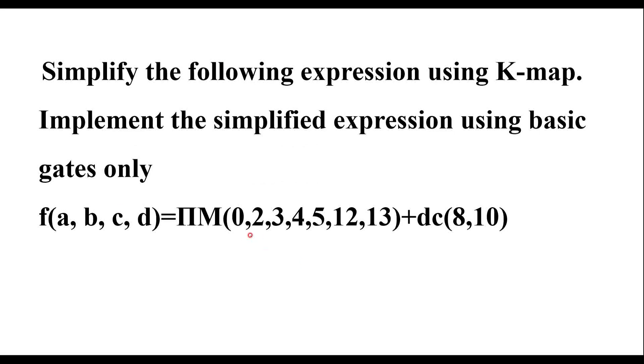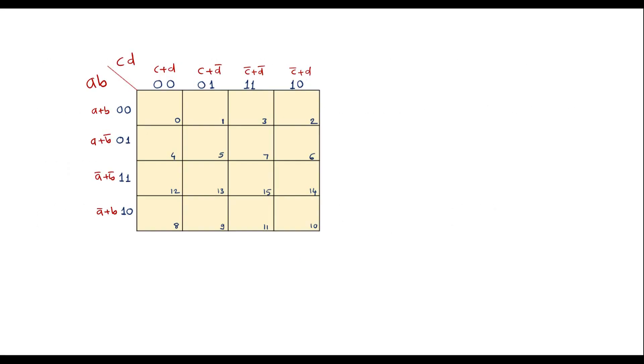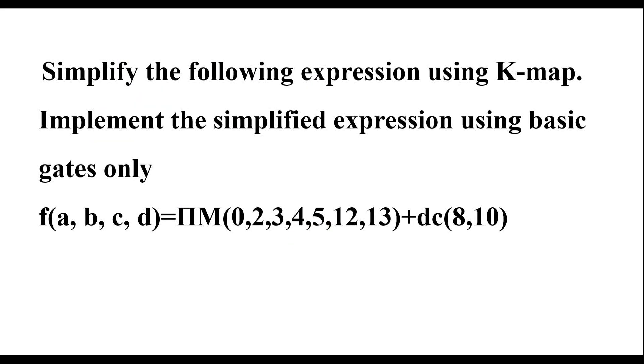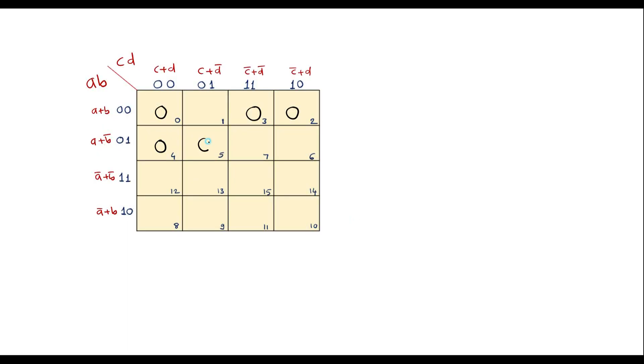So now in these cell numbers we have to enter 0. That is 0, 2, 3. Let me enter 0 in 0 cell, 2, 3. Then we have 4, 5, 12, 13. That is 4, 5, 12, 13.